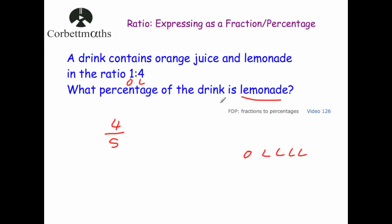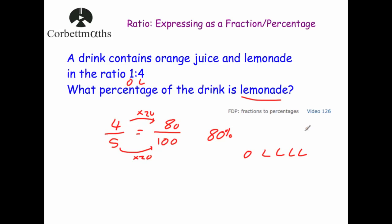Now that's it as a fraction. The question asks for a percentage. I know four fifths is eighty percent because a fifth is twenty percent and there are four of them. Alternatively, convert it to have a denominator of 100: multiply five by twenty to get 100, and four by twenty to get 80, so eighty out of a hundred is eighty percent. That's the answer — eighty percent of the drink is lemonade. My advice is to change the ratio to a fraction first, then convert to a percentage.